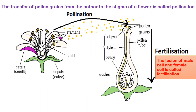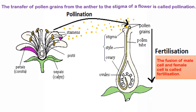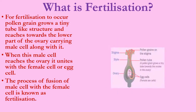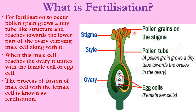In our previous video, you have learnt about the process of pollination, where the pollen grains are transferred from the anther to the stigma of the same flower or another flower. Now let us see what exactly happens after pollination. The next and most important step is fertilization, where the fusion of male cell and female cell takes place. For fertilization to occur, a pollen grain grows a tiny tube-like structure and reaches towards the lower part of the ovary, carrying the male cell along with it. When this male cell reaches the ovary, it unites with the female cell or egg cell. The process of fusion of male cell with the female cell is known as fertilization.